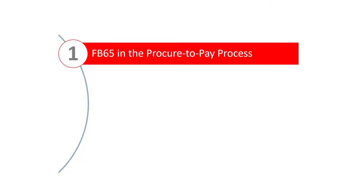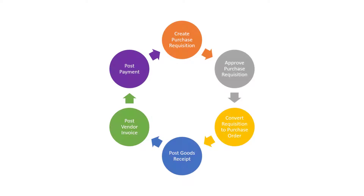Let's begin with where Transaction FB65 fits in the Procure-to-Pay process. It's useful to mention that a lot of organizations use the term credit note rather than credit memo. Credit memo is SAP's chosen term for this type of document. However, the two terms are interchangeable — either one is acceptable, and in this video I'll make use of both terms.